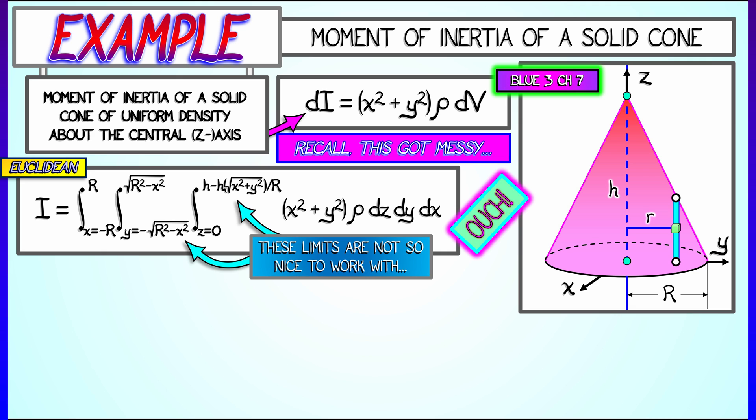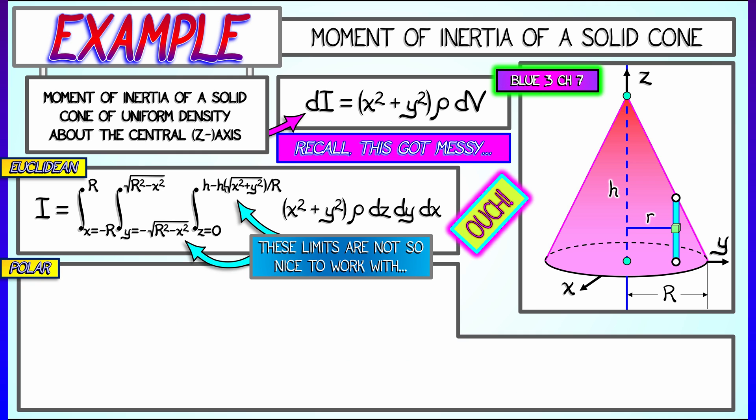But look at this. This is clearly set up for polar coordinates. I've got that x squared plus y squared all over the place. So if we do a conversion, then the integrand clearly converts to r squared times rho times the volume element, r dz dr d theta in that order.